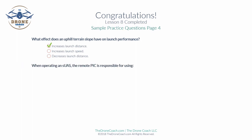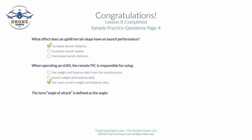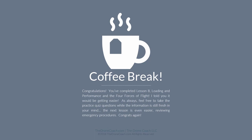When operating an SUAS, the remote pilot-in-command is responsible for using the weight and balance data from the manufacturer — and if one wasn't supplied, use the most current weight and balance data. The term angle of attack is defined as the angle between the wing chord line and the relative wind. We've completed lesson eight — loading and performance and the four forces of flight. Practice exam questions are available at the bottom to answer on your own, and we'll see you in the next lesson.